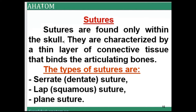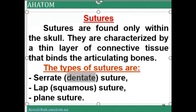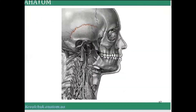Sutures are found only within the skull. They are characterized by a thin layer of connective tissue that binds the articulating bones. The types of sutures are: serrate (also called dentate), lap or squamous suture, and plane suture — for example, the squama of the temporal bone.